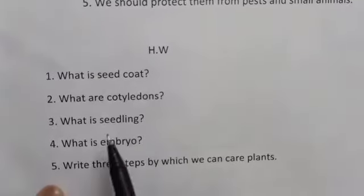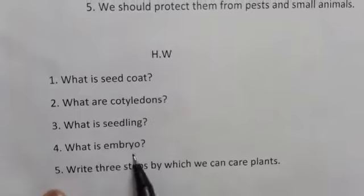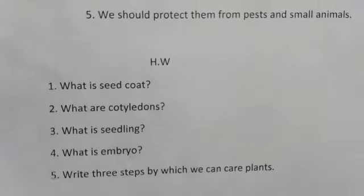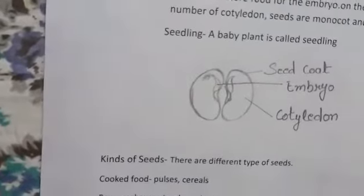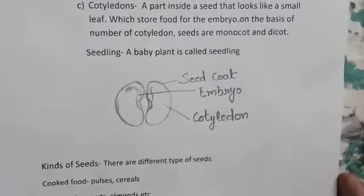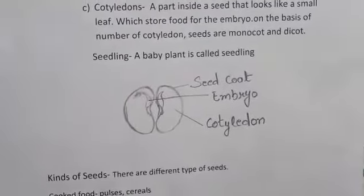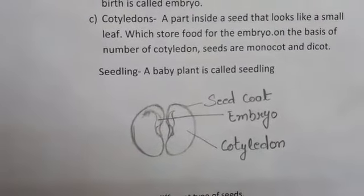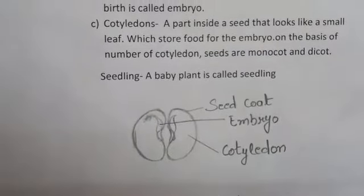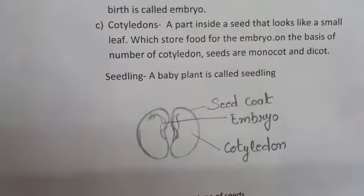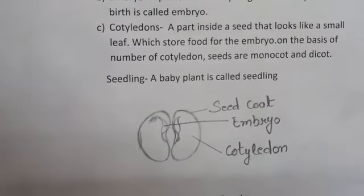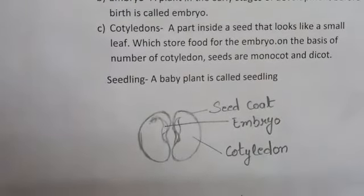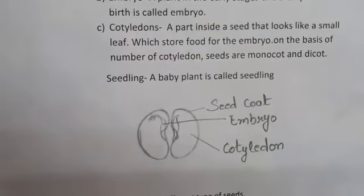What is an embryo? The small plant inside a seed is called the embryo. Cotyledons are the parts of the seed which store food for the embryo. The questions to answer are: What is seed coat? What are cotyledons? What is a seedling? And what are three ways to protect plants?